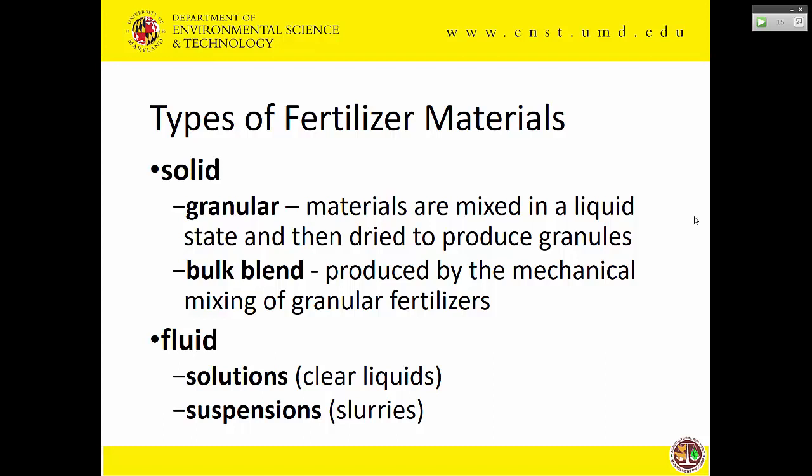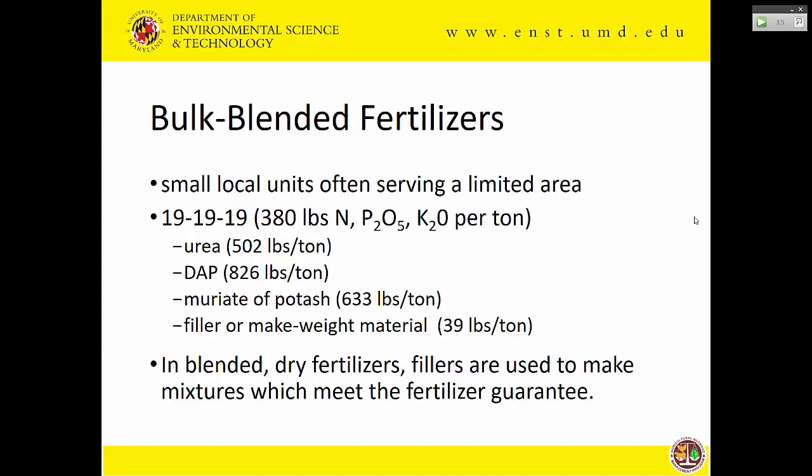Then there are fluids. You can have solutions where everything is in solution — clear liquid — or you can have suspensions that are basically slurries. Fluids have the benefit of being able to apply other materials in them at the same time. You can blend fertilizers — it's certainly a potential question — and if you look at what analysis you're looking for and what products you have available, it's not that hard to work through how much of each you might need. For example, to make a triple 19 blend using urea, DAP, and muriate of potash, you'd need 500 lbs of urea, 826 lbs of DAP, and 633 lbs of potash per ton. When those don't add to 2,000 lbs, you add filler to make up the ton.